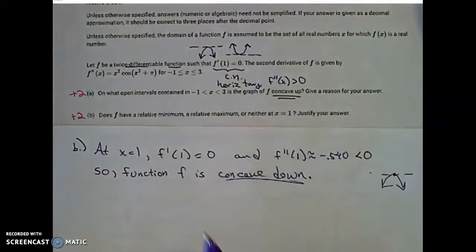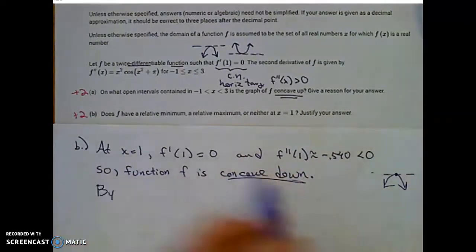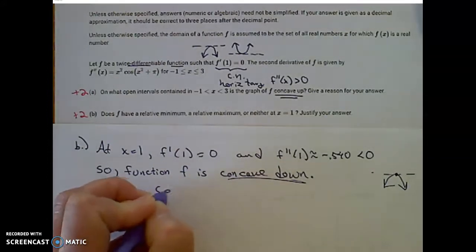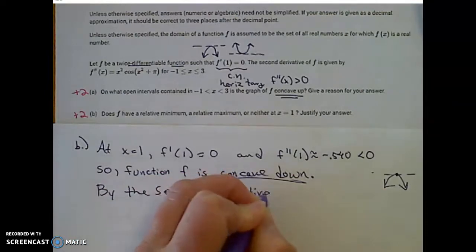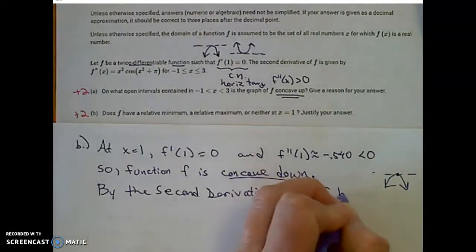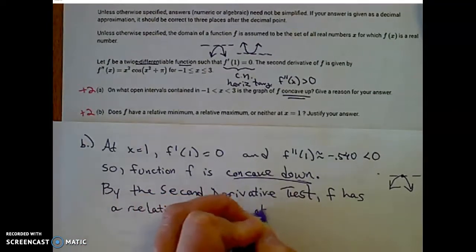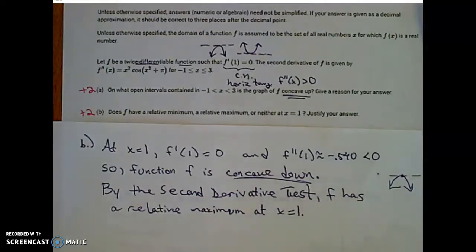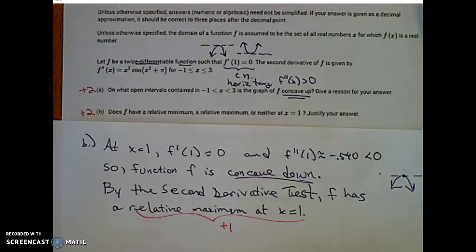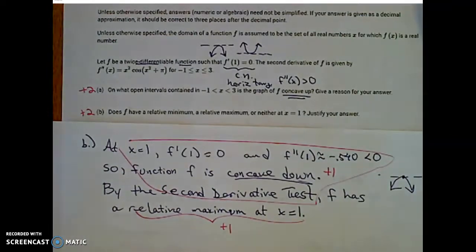By the second derivative test — first derivative is 0, second derivative is negative — f has a relative maximum at x equals 1. This is a two-point portion: one point for being correct, and another point for giving justification. A clear reason for why there's a relative maximum is all of that reasoning using the second derivative test.